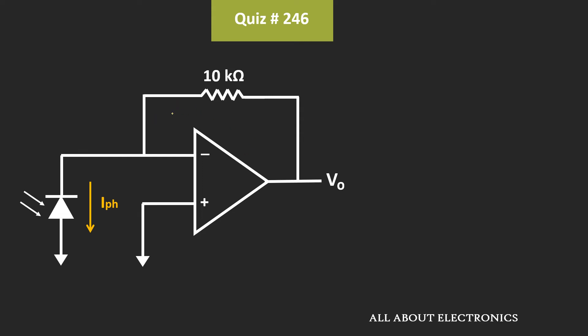Now here, let's say the current which is flowing through this 10kΩ resistor is equal to I1. So if we apply the KCL at this node, then we can say that this photocurrent IpH is equal to I1.